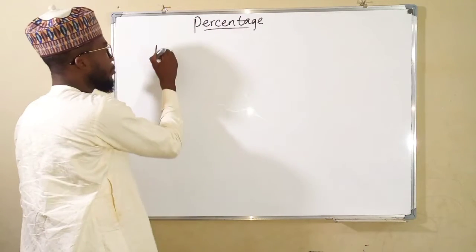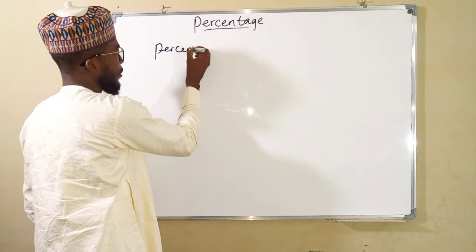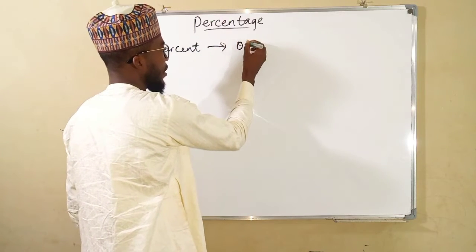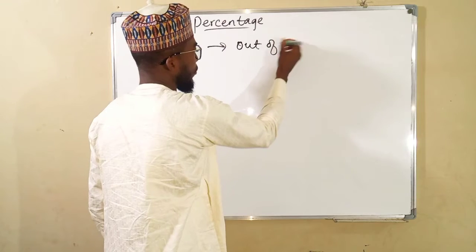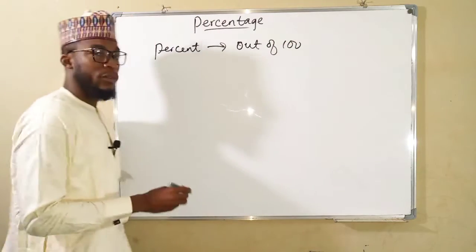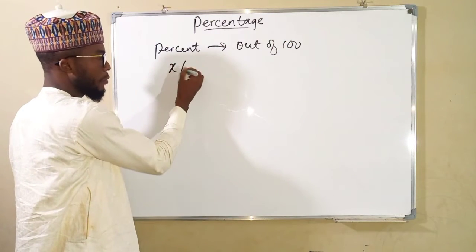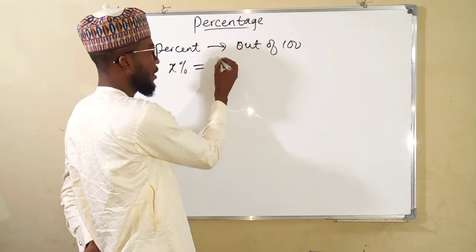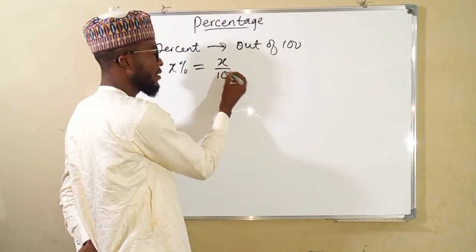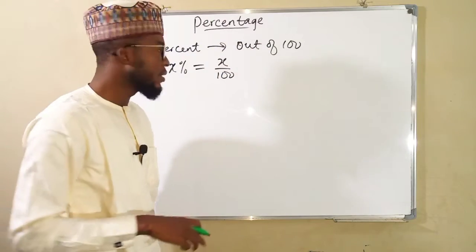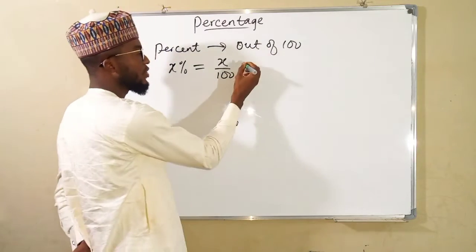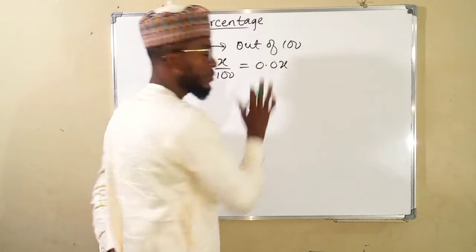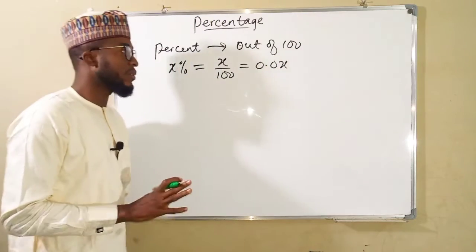A percent always implies out of 100. So suppose we have X percent — this can be written as X over 100 in rational form, and it can also be written as 0.0X as a decimal fraction.